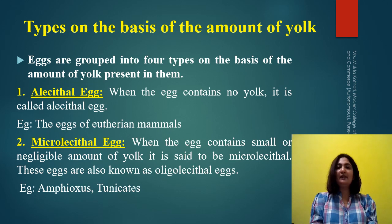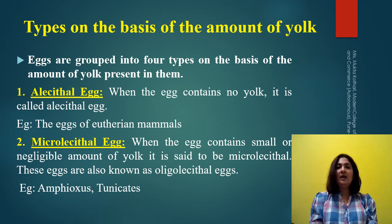If you consider the amount of yolk inside the egg cell, there are mainly four types: alecithal type of eggs, microlecithal type of eggs, mesolecithal type of eggs, and the fourth one is mega, macro, or polylecithal type of eggs. Here the 'lecithal' word means yolk.